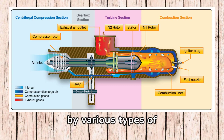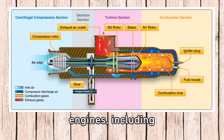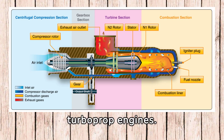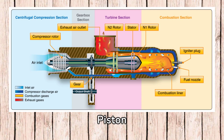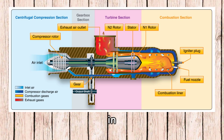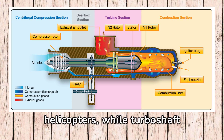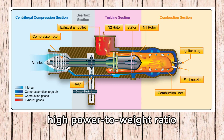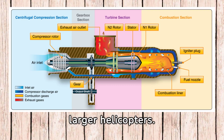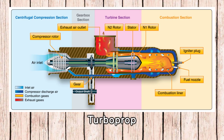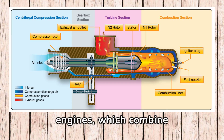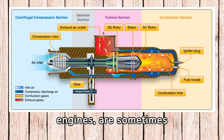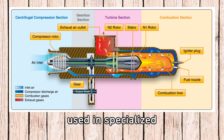Helicopters are powered by various types of engines, including piston engines, turboshaft engines, and turboprop engines. Piston engines are commonly found in smaller, light helicopters, while turboshaft engines are favored for their high power-to-weight ratio and reliability in larger helicopters. Turboprop engines, which combine features of both turbine and propeller-driven engines, are sometimes used in specialized applications.